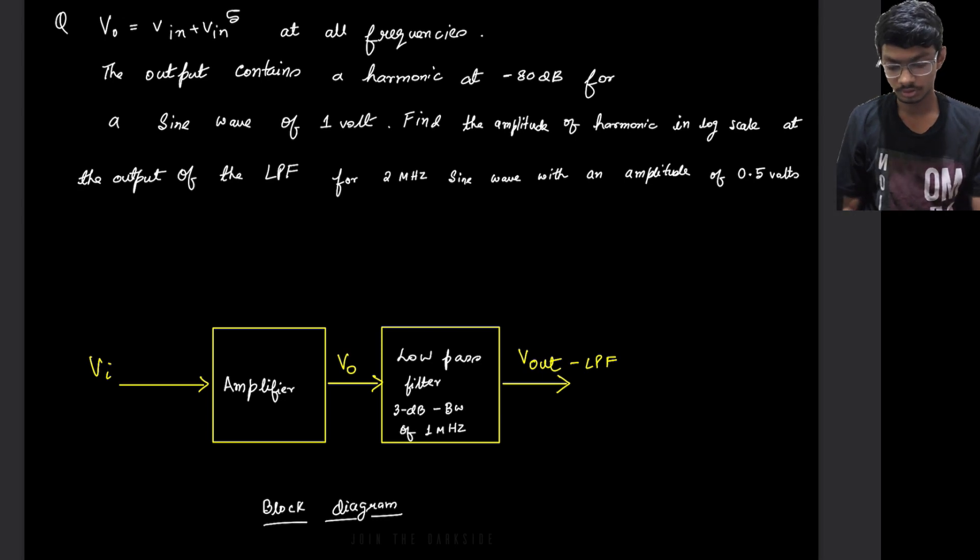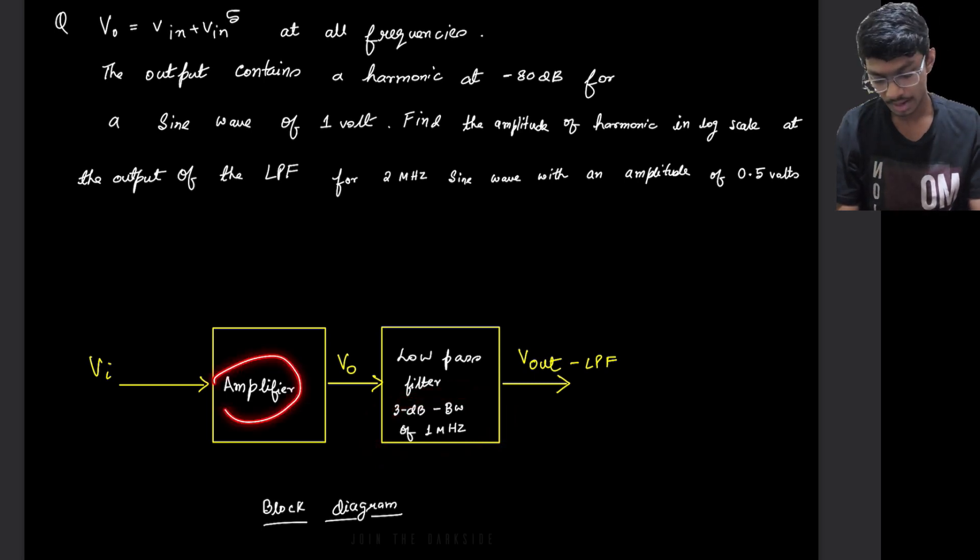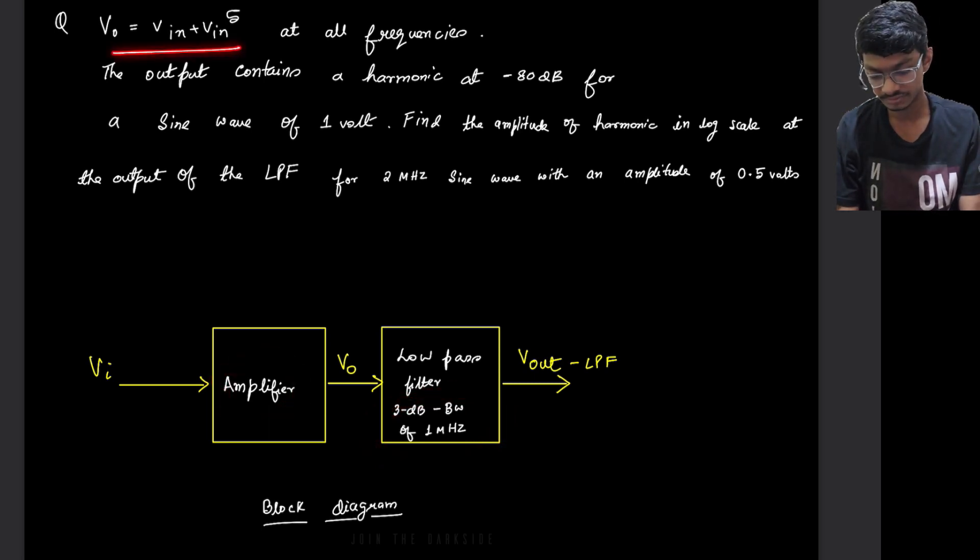Hello everyone. So the below question has a block diagram given of one amplifier and one low pass filter. The low pass filter has a 3 dB bandwidth of 1 MHz and the amplifier has characteristics given like this,